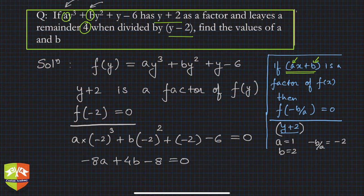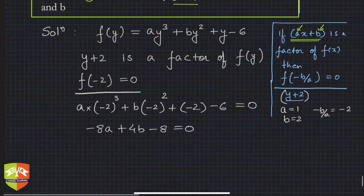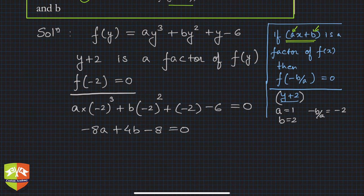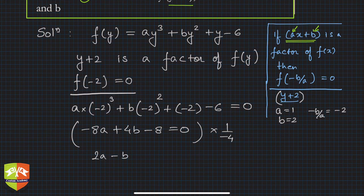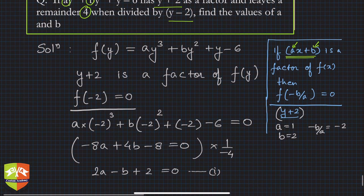Dividing the entire equation by −4, we get 2a − b + 2 = 0. This is Equation 1. Now for the second condition: the polynomial leaves a remainder of 4 when divided by (y − 2).